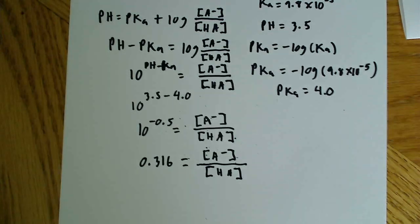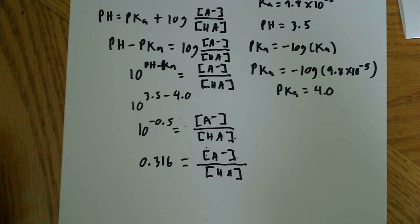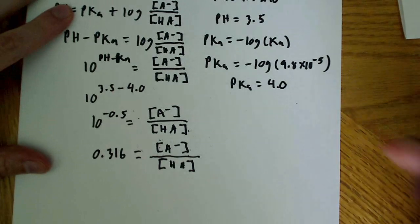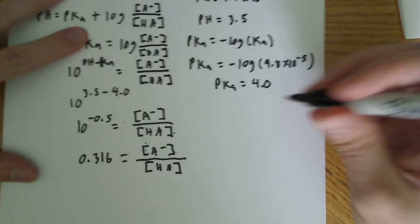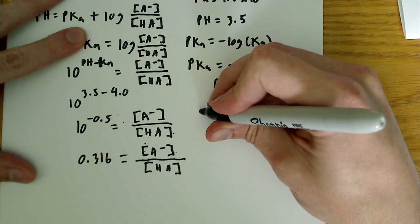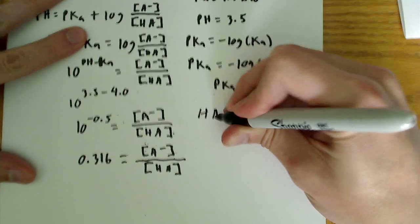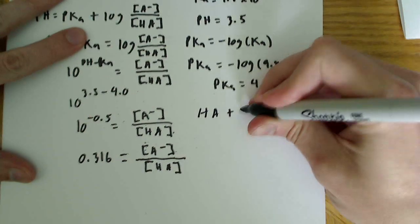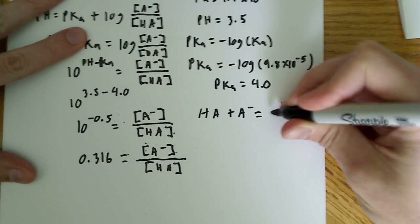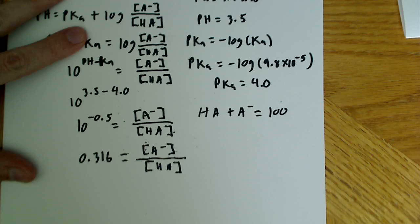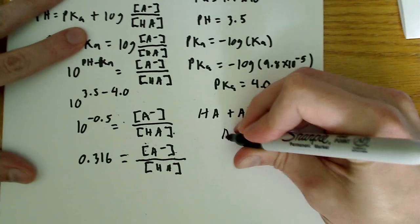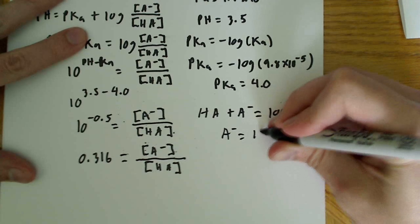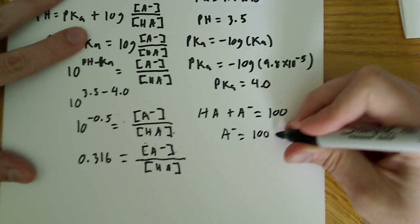So, now that we have that, we can actually do some more algebra here because we know that the total percentage of protonated and deprotonated is going to be 100%. So, we can say HA plus A minus is equal to 100. And from there, we can solve for one of the variables. So, I'll solve for A minus is equal to 100 minus HA.